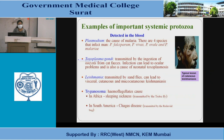Examples of important systemic protozoa detected in the blood: Plasmodium, the cause of malaria — there are four species that infect humans: P. falciparum, vivax, ovale, and malariae. Toxoplasma gondii causes neonatal toxoplasmosis. Leishmania, transmitted by sand flies, can lead to visceral, cutaneous and mucocutaneous leishmaniasis. Trypanosoma hemoflagellates cause sleeping sickness in Africa and Chagas disease in South America.